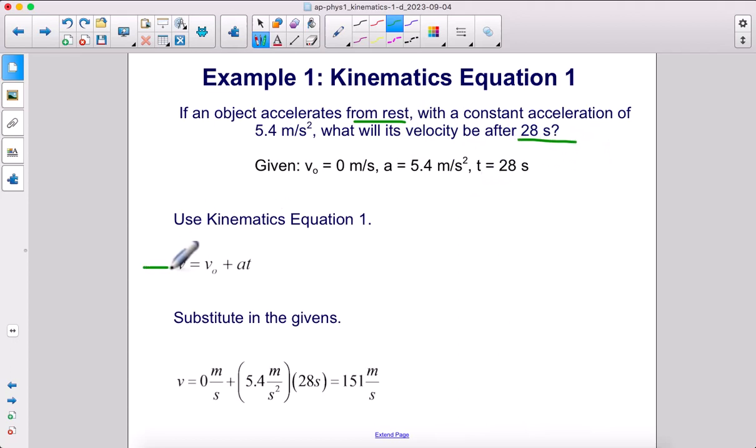So we can use kinematics equation one. We don't even have to rearrange it. We just plug in our givens. Initial velocity is zero, acceleration 5.4, time 28 seconds. Our final velocity will be 151 meters per second.